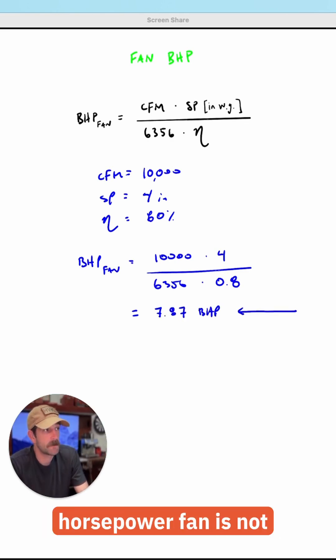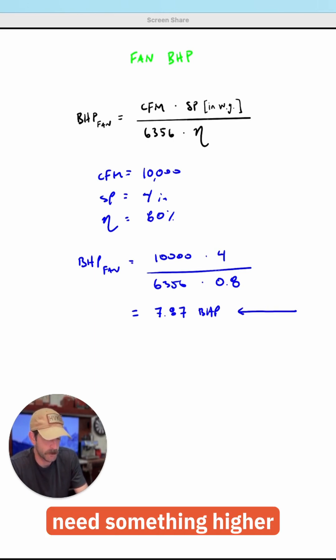So this right here tells us a 5 horsepower fan is not going to cut it. We're going to need something higher than this number. All things considered, maybe up to a 10 horsepower fan to accomplish our system requirements.